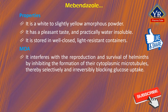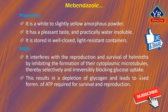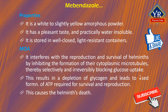Mebendazole interferes with the reproduction and survival of helminths by inhibiting the formation of their cytoplasmic microtubules, thereby selectively and irreversibly blocking glucose uptake. This results in a depletion of glycogen stores and leads to reduced formation of ATP required for survival and reproduction of the helminth, eventually causing the helminth's death.